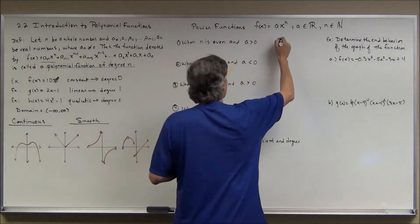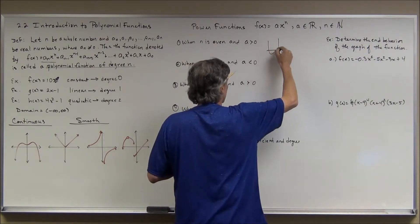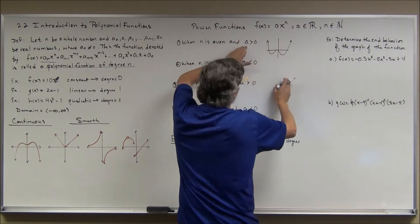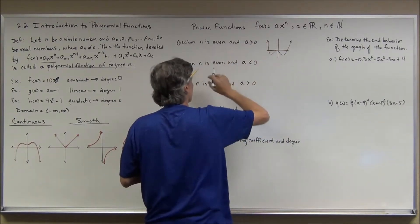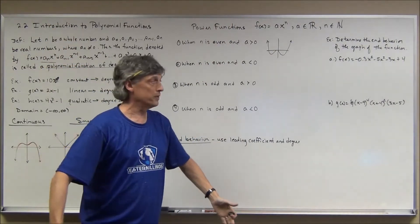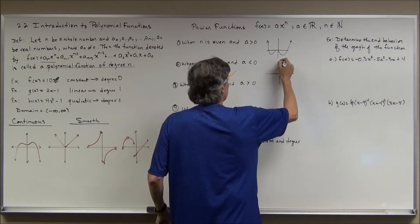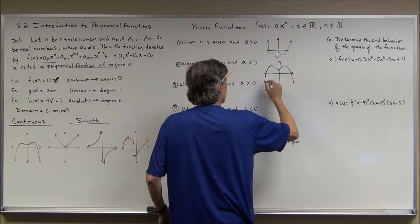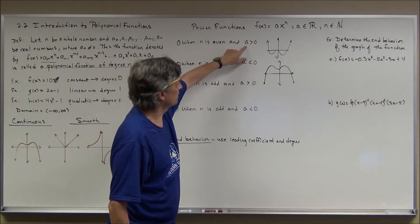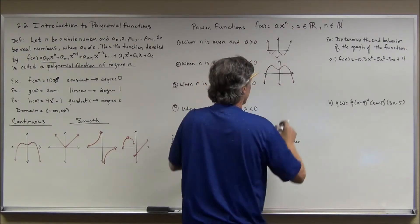When n is even and a is positive, the graph looks like a smooth continuous curve with both ends going upward — similar to how a quadratic with positive a opens upward. When n is even and a is negative, both ends go downward. The ends go to positive infinity in the first case and to negative infinity in the second case.